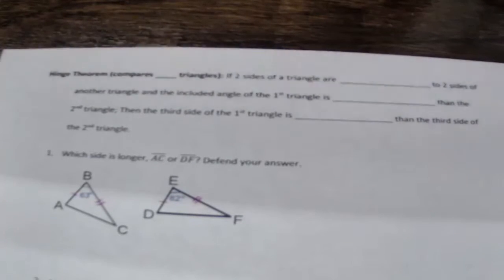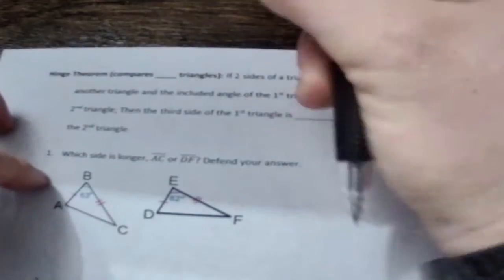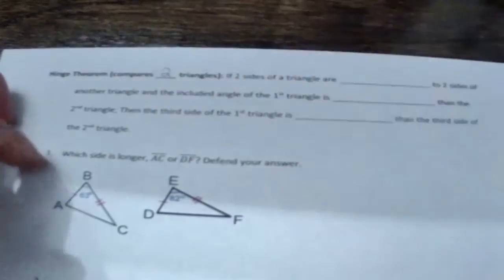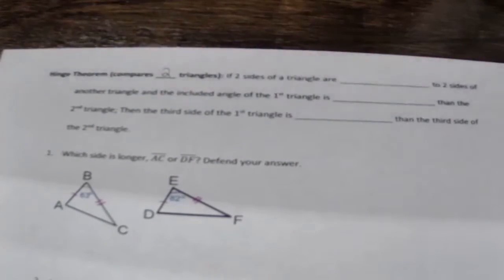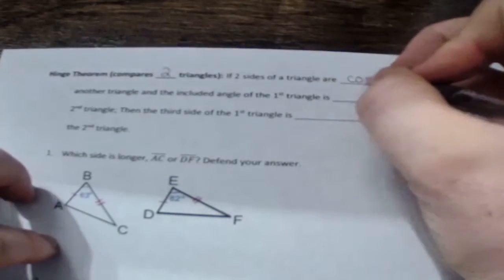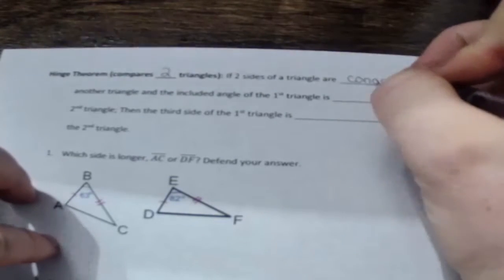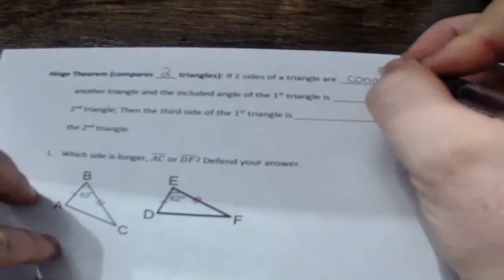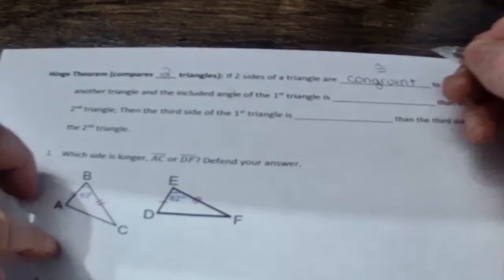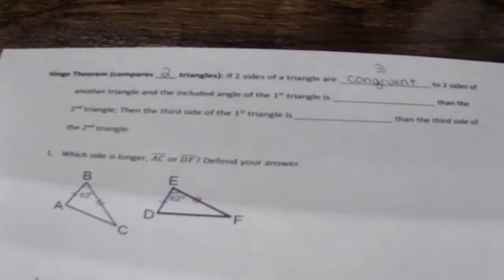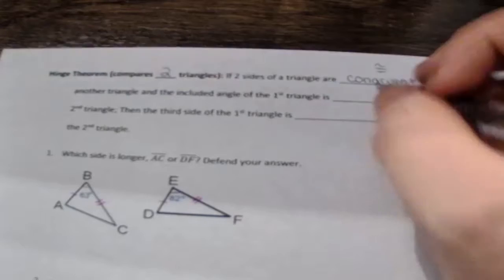Okay, so at the top we have Hinge Theorem compares two triangles. If two sides of a triangle are congruent - and if you don't remember, the symbol for congruent is the equal sign with the squiggly - so if it's congruent to two sides of another triangle and the included angle of the first triangle is greater than the second triangle,